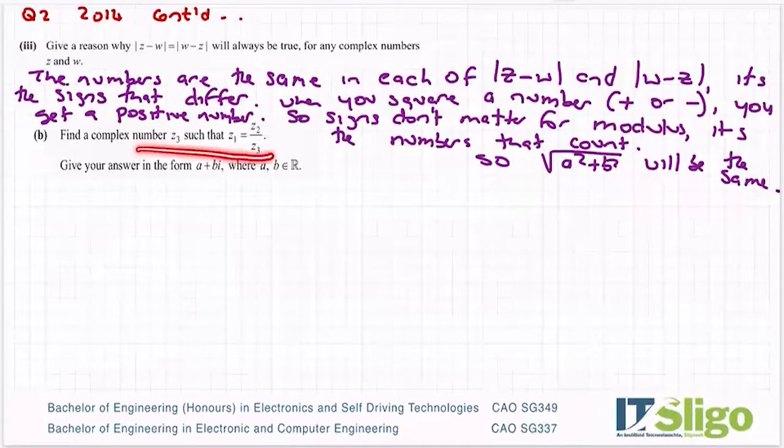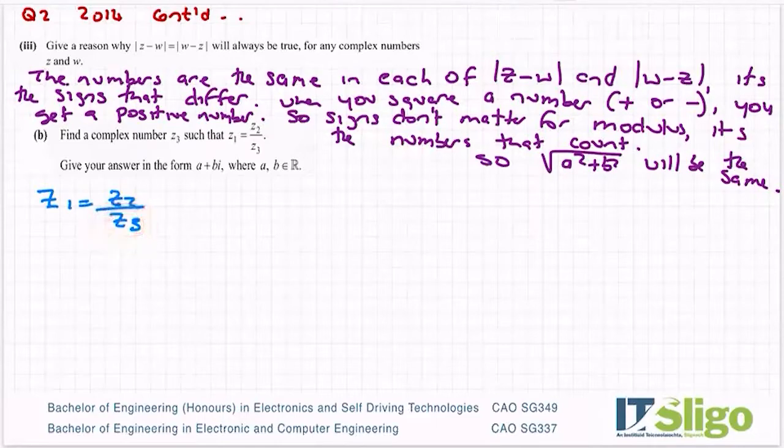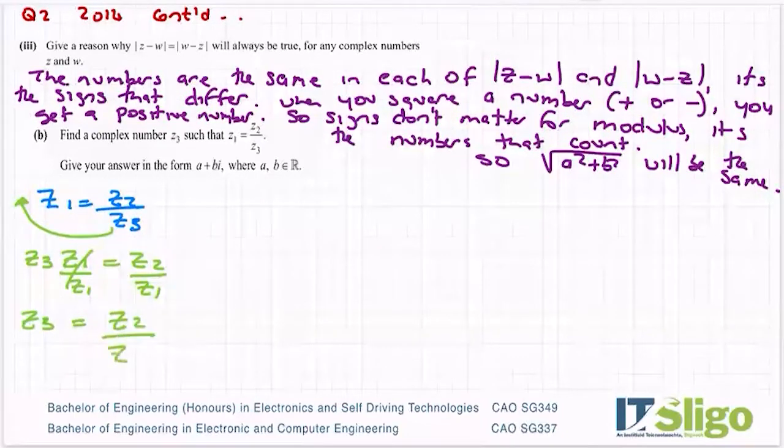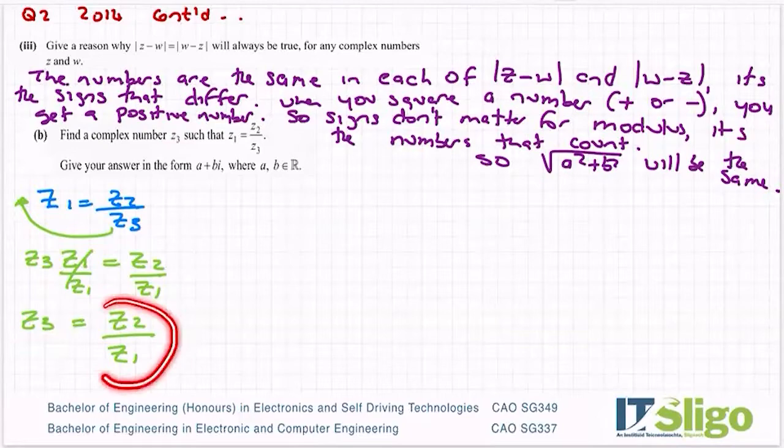Part B then. Find a complex number Z3 such that Z1 equals Z2 over Z3. Give your answer in the form A plus Bi. So this is examining whether you know how to divide complex numbers. Now what I don't particularly like about this question is the way they've written it. So they've told us that Z1 is equal to Z2 over Z3, and they've asked us to work out this Z3 one on the bottom. So we have to manipulate it first. So in other words, bring the Z3 up there, so you get Z3 times Z1 being equal to Z2. And then divide both sides by the Z1 so that you get Z3 on its own.